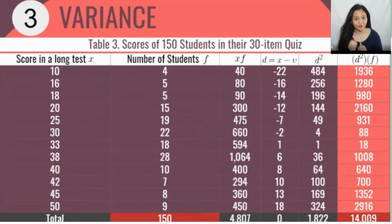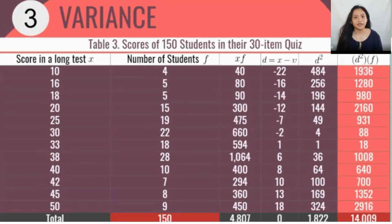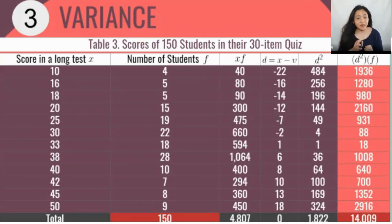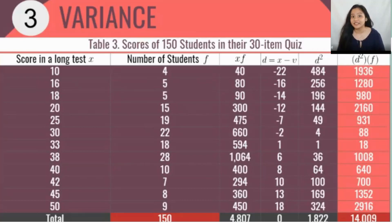Next, multiply the squared differences by their frequencies (D squared times F): 484 times 4 equals 1,936; 256 times 5 equals 1,280; and so on. The columns you need to add to your table to manually compute variance are: XF, X minus mean, D squared, and D squared times F. The summation of D squared times F is 14,009, divided by the total number of observations (150), giving a variance of 93.39.